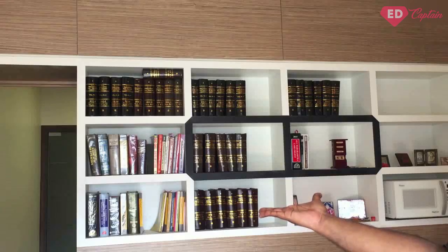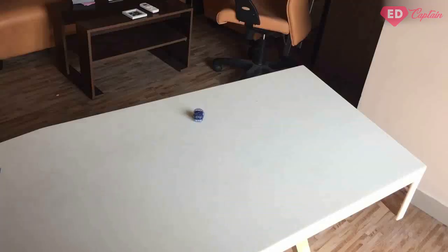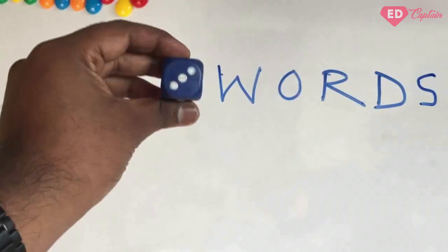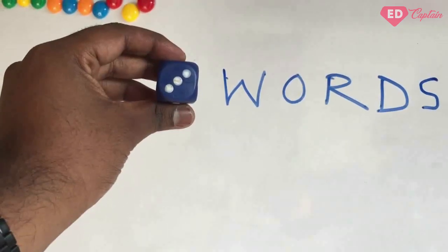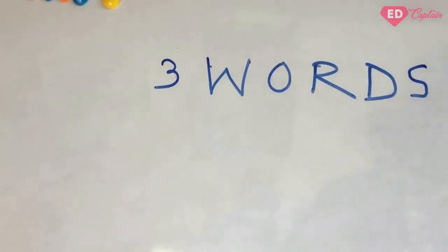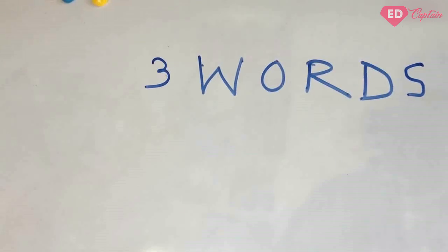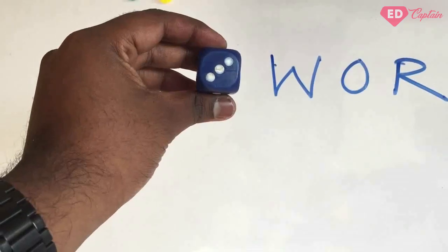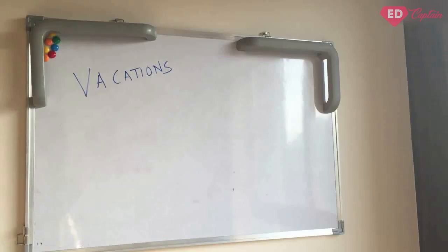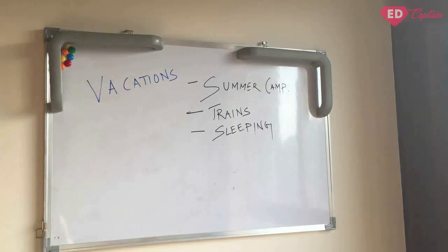Then player 1 pulls up a dice and rolls it. Now if the dice says 3, then each player or each team has to give 3 words. In this case, let's suppose the dice says 3. Let's say our theme was vacations. So for the theme vacations, we put 3 words against it.